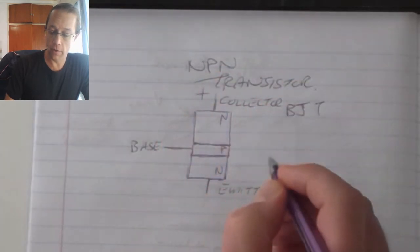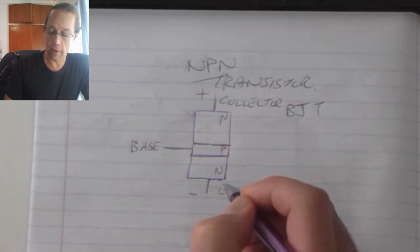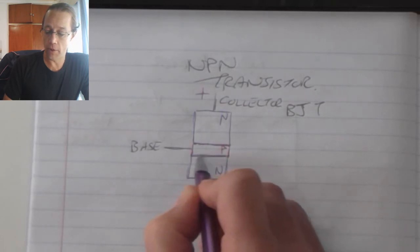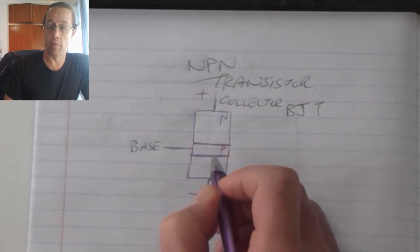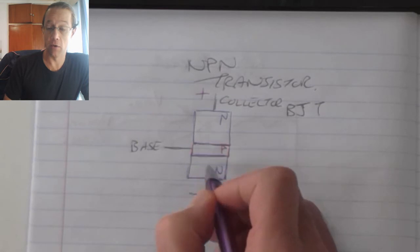When I connect a positive on the collector and a negative on the emitter, the bottom P-N junction starts to become forward biased but current can't flow yet.